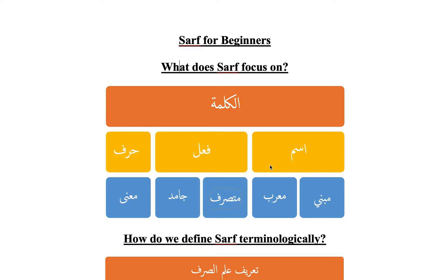The first question we want to answer is: what does sarf focus on? We know that in the Arabic language, every single word can be categorized into one of three categories — no word goes outside of one of these: the ism, the fi'l, and the harf. As for the ism, a word considered an ism will be either mabni or mu'rab. If a word is considered a fi'l, it will be either mutasarrif or jamid. And if it is a harf, it will be a harf ma'na.